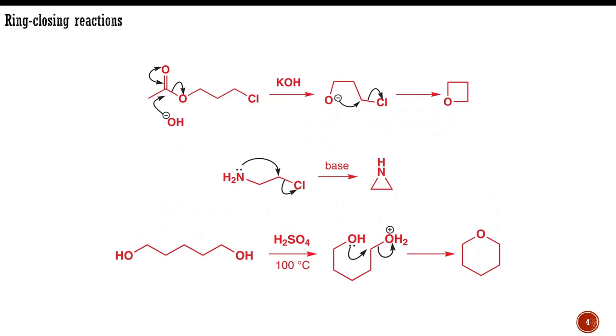Aziridine itself, for example, was first prepared in 1888 from 2-chloroethylamine. Related reactions can be used to form 3-, 5-, and 6-membered nitrogen heterocycles, but normally fail to form 4-membered rings.